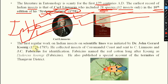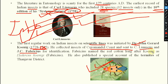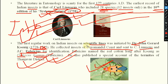The first regular work on Indian insects on scientific lines was initiated by Dr. JG Koenig (John Gerard Koenig). He collected insects of the Coromandel Coast and sent them to Carl Linnaeus and John Christian Fabricius for identification. Fabricius named the red cotton bug according to Koenig's name — giving it the scientific name Dysdercus koenigii. Koenig also published a special account of the termites of the Tanjore district.